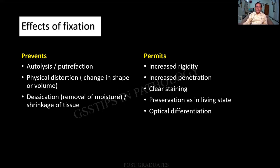What does fixation permit? The tissue is very soft; fixation allows it to develop rigidity. There is increased permeation. Clear staining follows fixation. The tissue is preserved in as lifelike a manner as possible. It also improves optical differentiation, as though your eyes are able to pass through the tissue. So — what it prevents, what it permits.